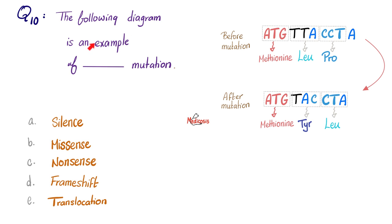Question 10. The following diagram is an example of what kind of mutation? Here is before the mutation, and here is the same after the mutation. The answer is frameshift mutation. We're shifting the frame. Why? Because I lost 1T. It's a deletion that led to frameshift mutation. In the good old days, this used to give me leucine, and this used to give me proline. But look after the frameshift. This is giving me tyrosine now, and this is giving me leucine. Because I've shifted by 1 nitrogenous base.